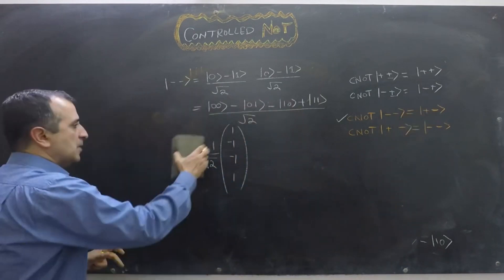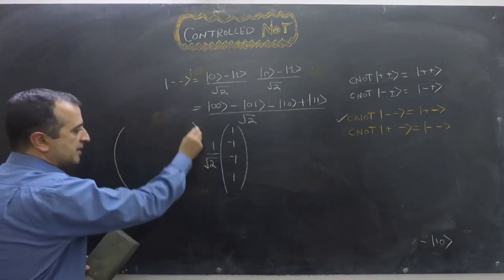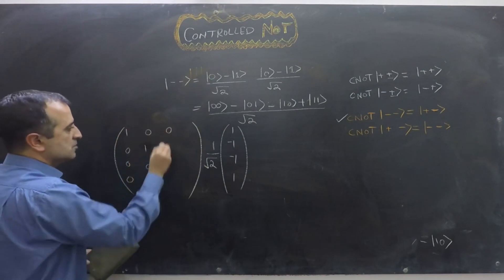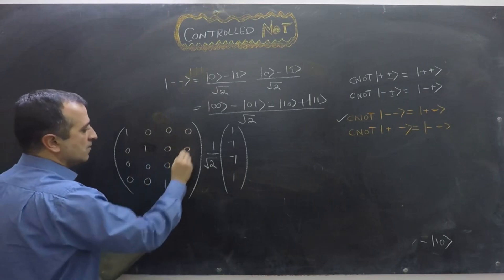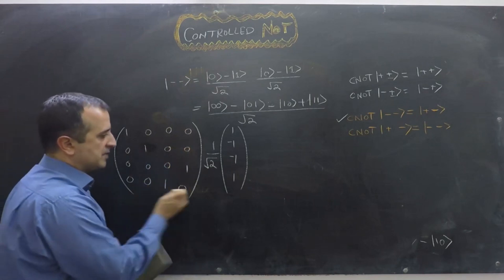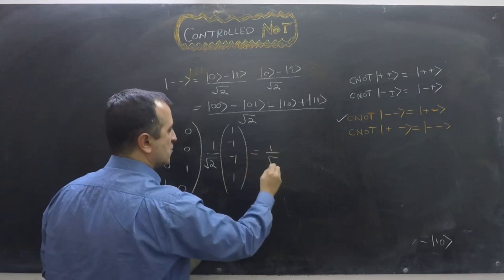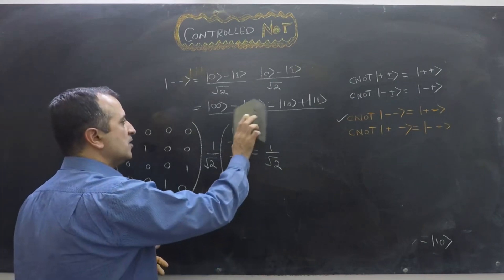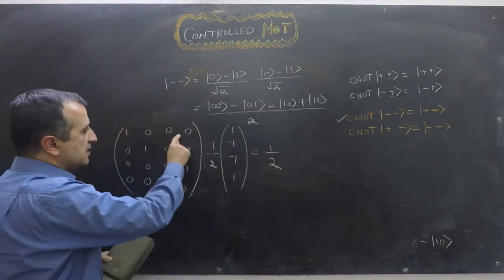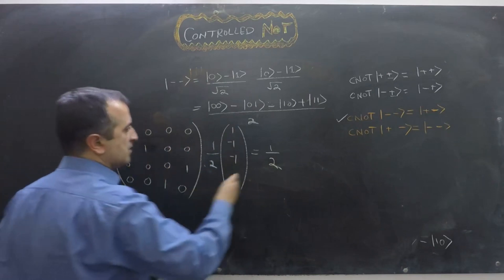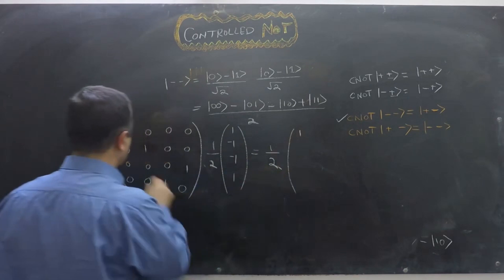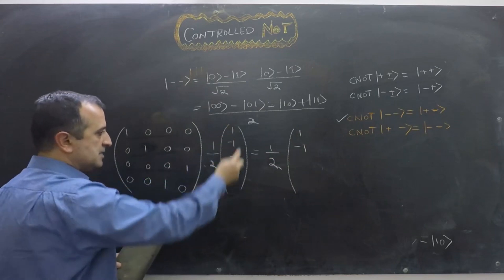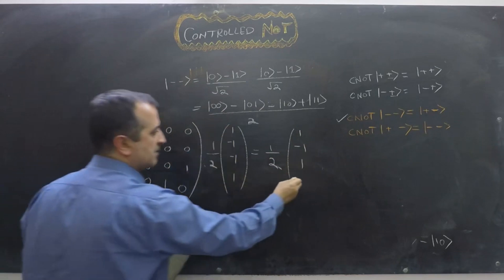Applying the CNOT matrix — [1,0,0,0; 0,1,0,0; 0,0,0,1; 0,0,1,0] — to the vector [1, −1, −1, 1] × (1/2) yields: row 1 gives +1, row 2 gives −1, row 3 gives +1, row 4 gives −1. So the result is [1, −1, 1, −1] × (1/2).